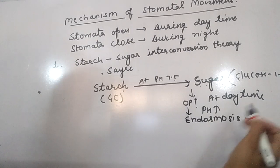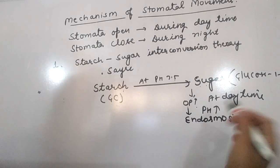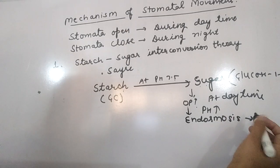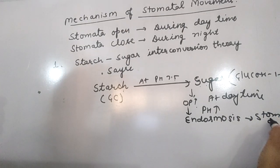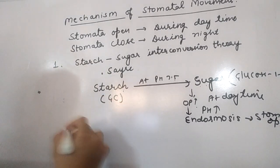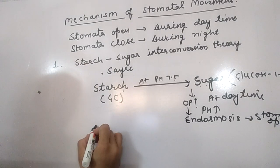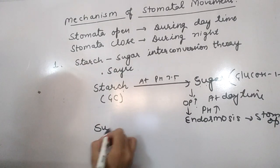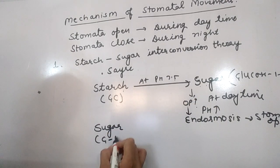Endosmosis happens, and water enters the guard cell. The guard cell turns turgid and the stomata open. The sugar formed is glucose-1-phosphate.